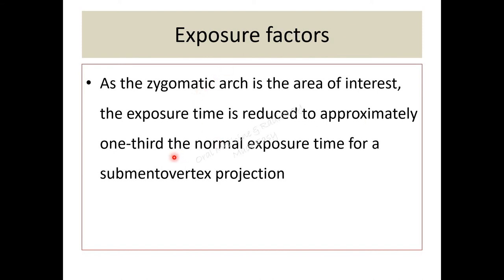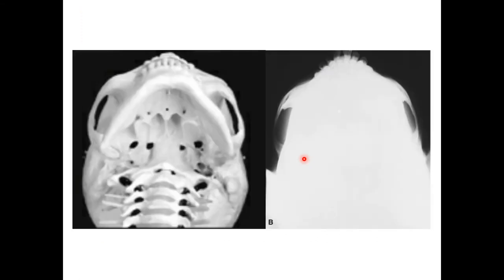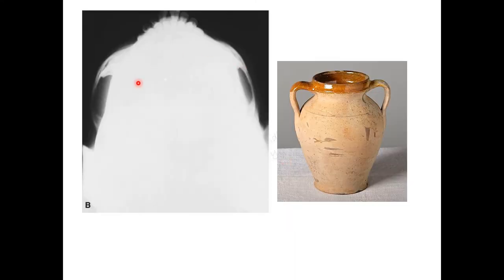This is how the jug handle view appears. Here all the other areas are masked by reducing the exposure time and only the zygomatic arch can be viewed. Since both the zygomatic arch on either side appears like the handle of a jug, it's called jug handle view.